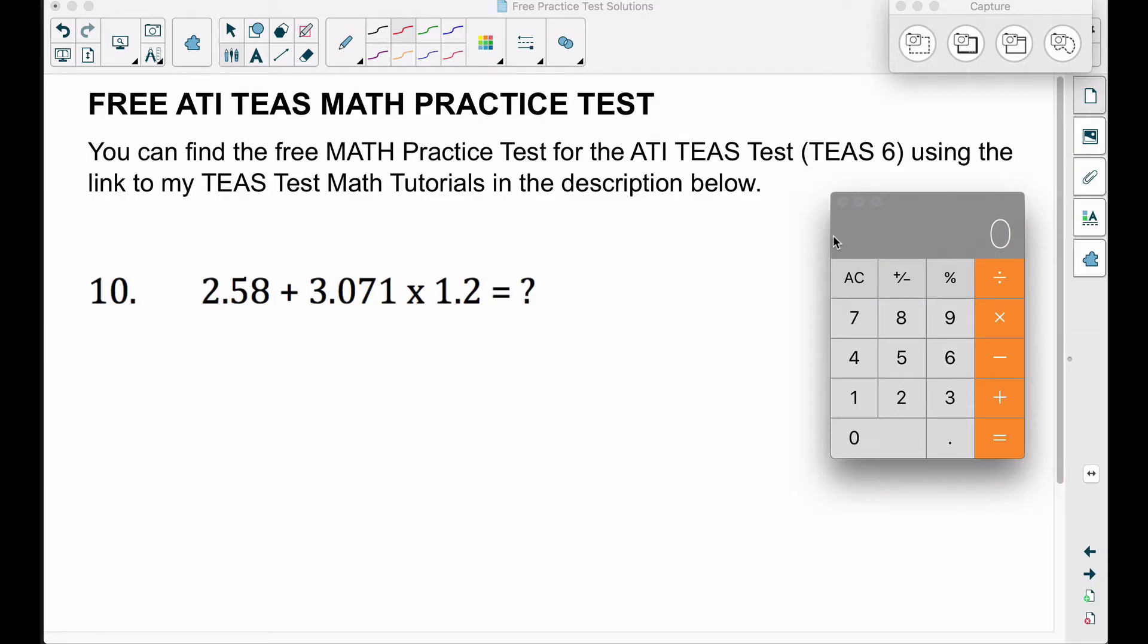In this video we're going to look at problem number 10 on the free ATI TEAS math practice test that I have posted at www.bcraftmath.com. Number 10: we want to add and multiply some decimals. Since you can use the calculator, just make sure you do the order of operations correctly. We want to multiply these first.